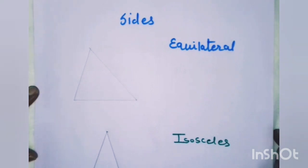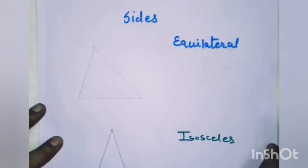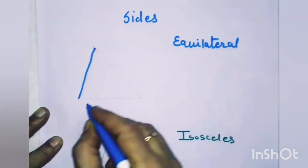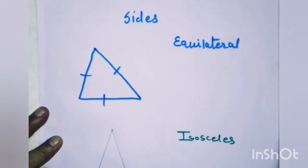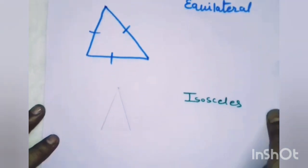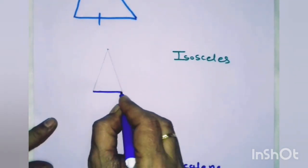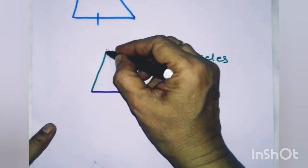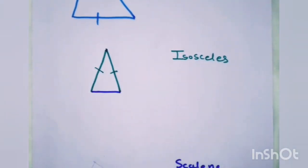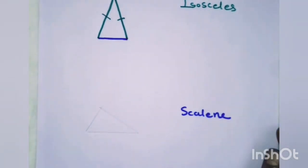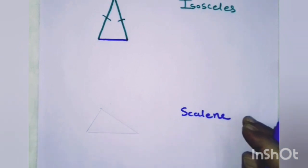Now I will explain the types of triangles on the basis of its sides. Equilateral triangle — in an equilateral triangle, the measure of all 3 sides are equal. That type of triangle is known as an equilateral triangle. The next one is an isosceles triangle. In an isosceles triangle, the measure of 2 sides are equal. And a scalene triangle — a triangle in which no 2 sides are equal is called a scalene triangle.